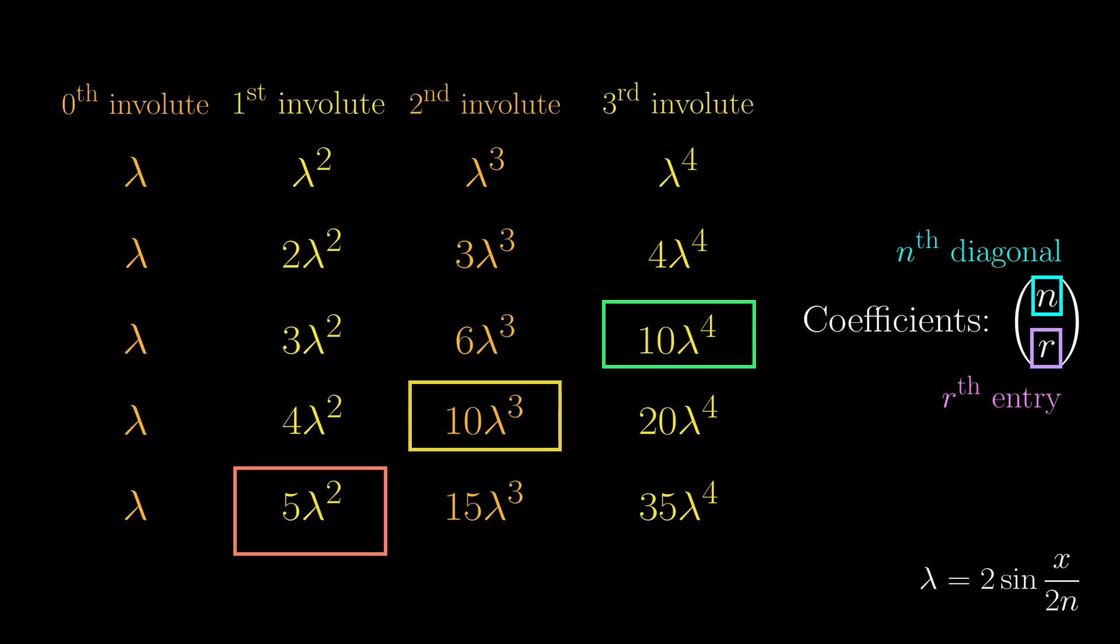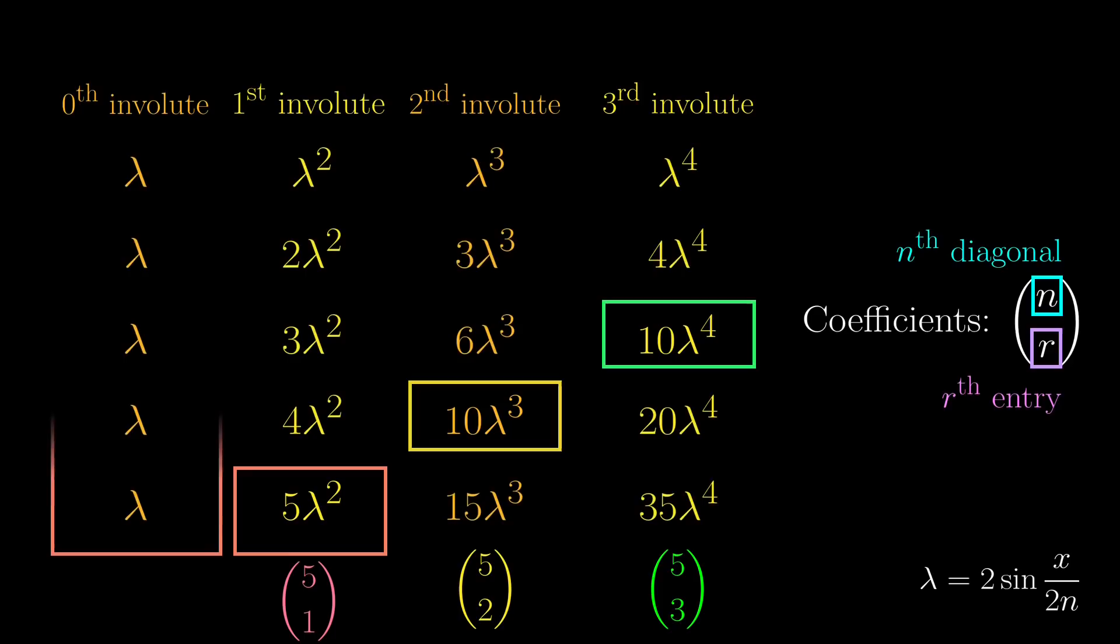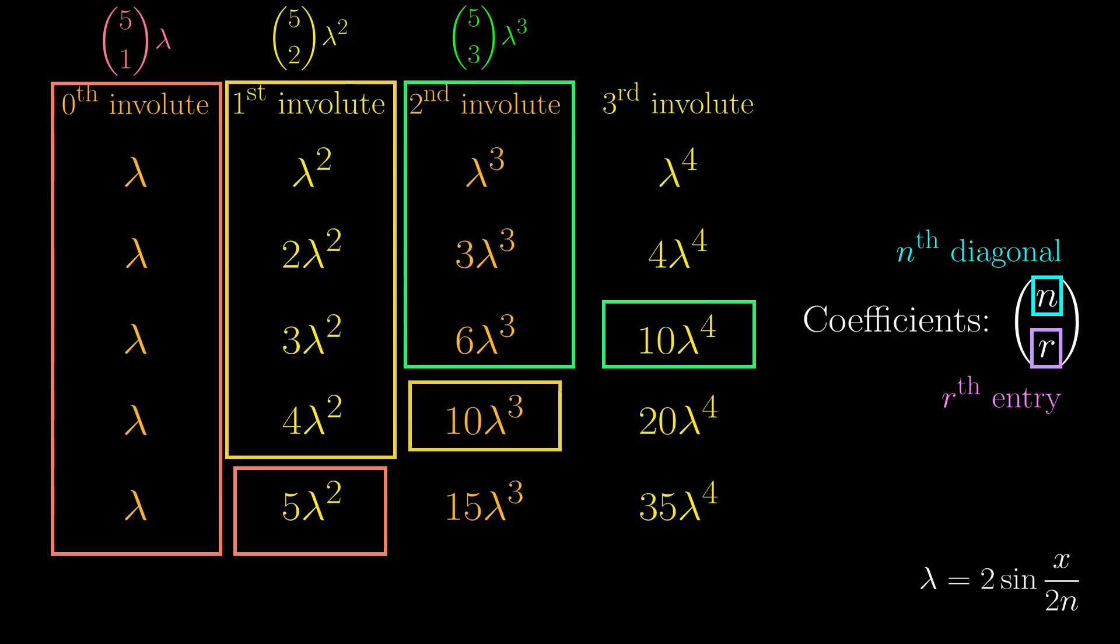And we can continue this process. But now note that these are entries on the same diagonal, actually, the 5th diagonal. Look, 0th, 1st, 2nd, 3rd, 4th, and 5th. So the entries here are 5 choose 1, 5 choose 2, and 5 choose 3, respectively. So the total length of the 0th involute is 5 choose 1 times lambda, the total length of the 1st involute is 5 choose 2 times lambda squared, and very similarly, the total length of the 2nd involute is 5 choose 3 times lambda cubed, and so on.